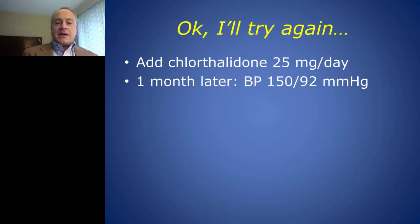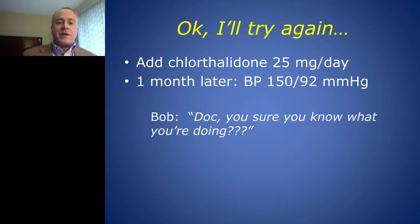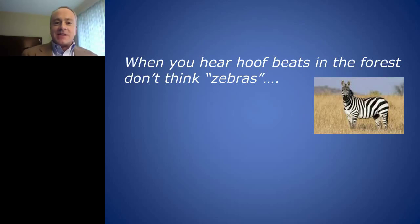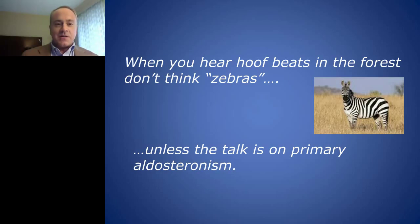So what do you do? You try again — you add a third blood pressure medication, chlorthalidone, which is a diuretic. A month later, there's no effect, and both patient and physician are becoming more frustrated. You get laboratory data again and note that his potassium has dropped below the lower limit of normal at 3.1. Clinically we say when you hear hoofbeat sounds in the forest, don't think of zebras — think of common things like run-of-the-mill essential hypertension. But since this is a talk on primary aldosteronism, what I'm showing here is that Bob likely has primary hyperaldosteronism.